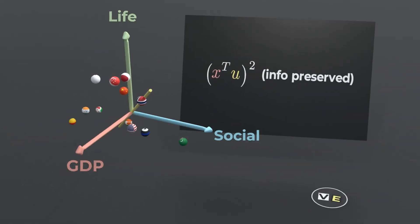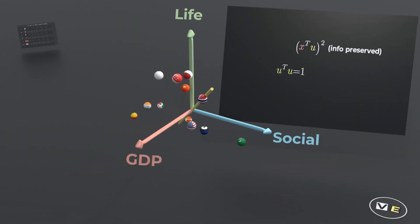Back to PCA, the first component that PCA picks is a unit vector that tries to preserve as much information as possible, so it maximizes the sum over all countries of the square of the inner product.